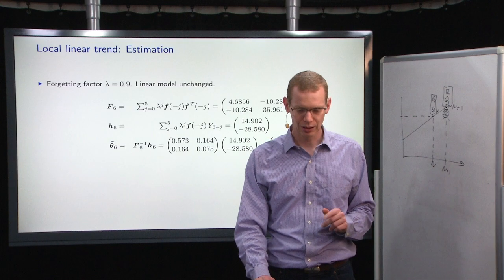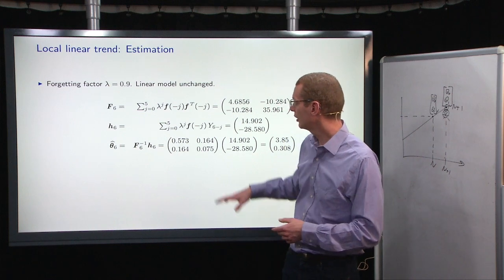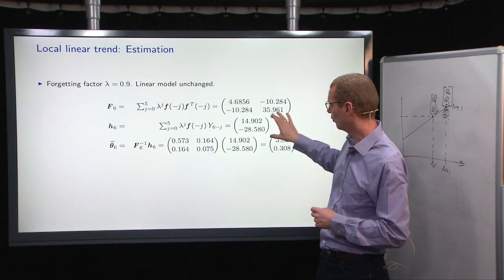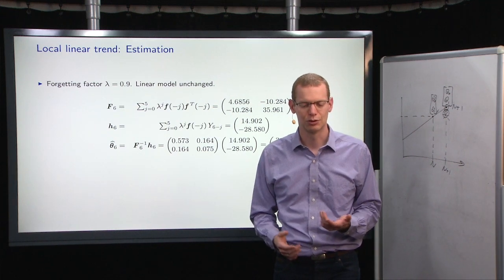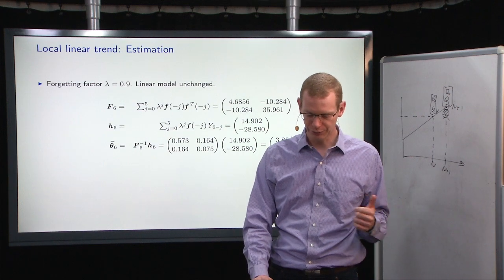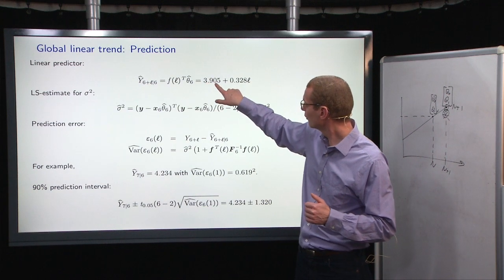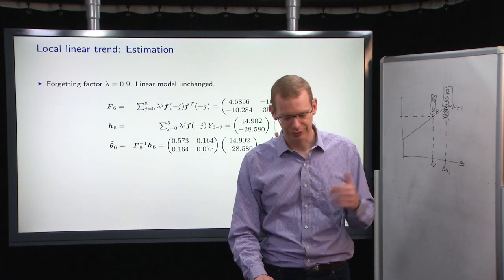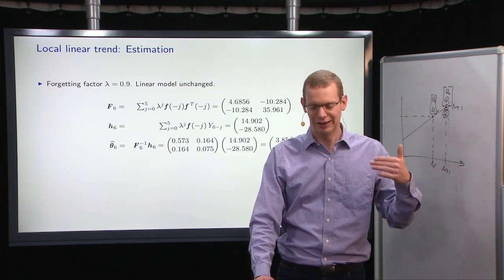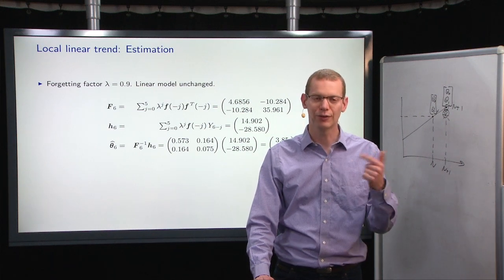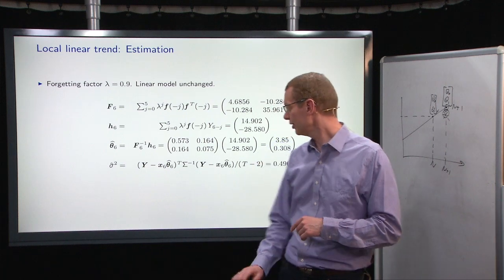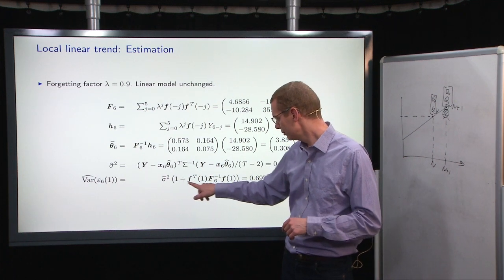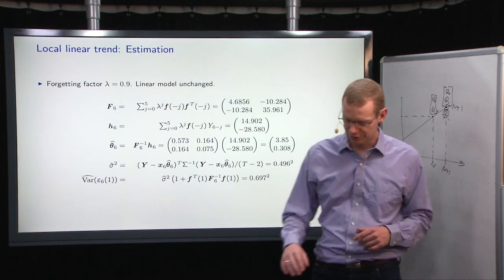Now, what if we want to do this locally instead? In this case, just using a lambda of 0.9, we can, in this case, we'll just pre-calculate F6 for once. And we get an estimate that is fairly close to what we got. So 3.85 and 0.3 for the slope. 3.85 and 0.3 for the slope. So they are fairly close. But also remember that what we used here is a lambda of 0.9. So its effective total memory is 10 observations, 1 divided by 1 minus lambda. And our estimate of sigma is roughly 0.5 square, or 0.5. So the one-step prediction error, or the variance of one-step prediction, is 0.7 square.